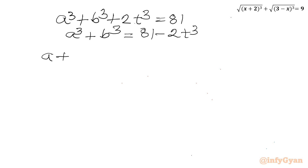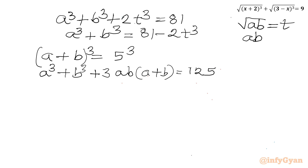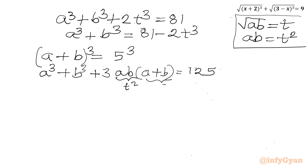Now I'll return to our first equation a + b = 5 and cube both sides. Applying the formula (a+b)³ = a³ + b³ + 3ab(a+b), the right side is 5³ = 125. Our substitution gives ab = t², and a+b = 5, so this becomes: a³ + b³ + 3·t²·5 = 125, i.e., a³ + b³ + 15t² = 125.